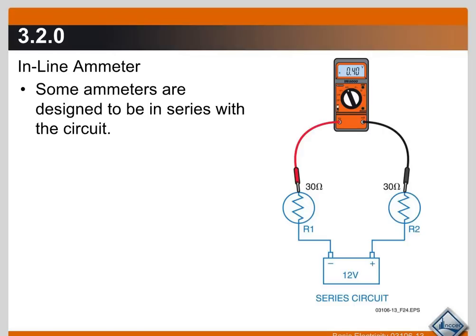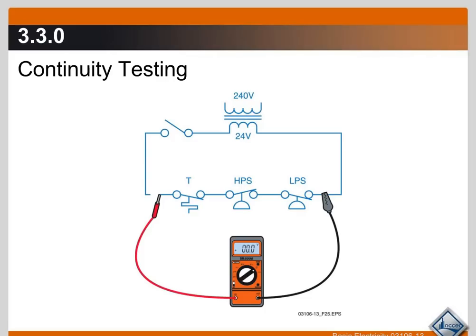There are also inline ammeters where you measure current in series — the current flows through the circuit and through the meter, completing the circuit. This is typically used for measuring small DC amp draws such as flame sense current or thermocouple current. It does require you to disconnect some wires and plug your meter in series into the circuit. It's usually used to measure microamps and milliamps in the DC ranges.